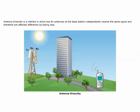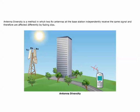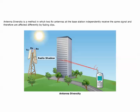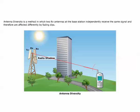One way to achieve diversity is to use two reception channels that are independently influenced by fading. The probability that a deep fading dip at the same time is affecting both of them is low. This method requires two RX antennas at the base station, independently receiving the same signal and therefore affected differently by fading dips.